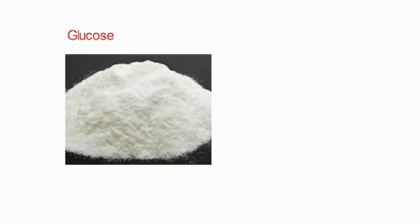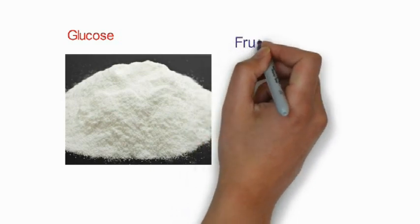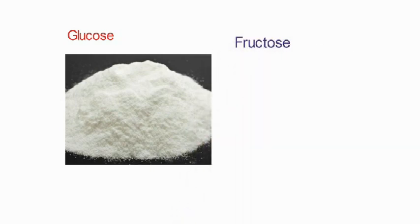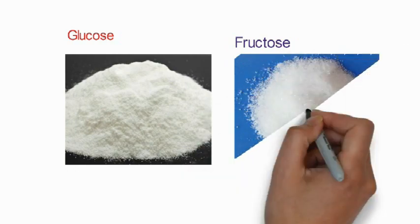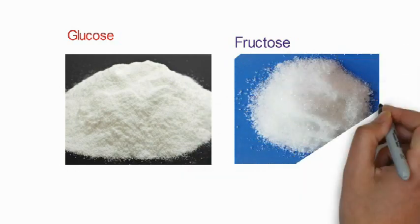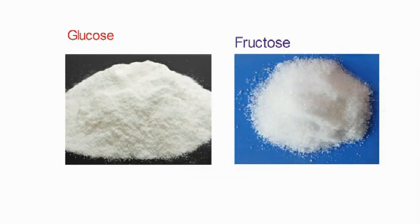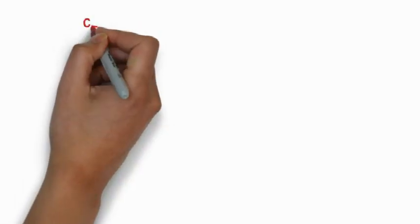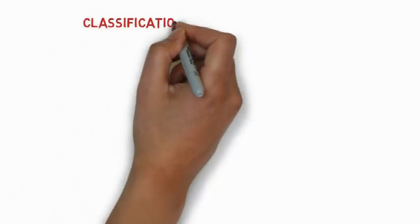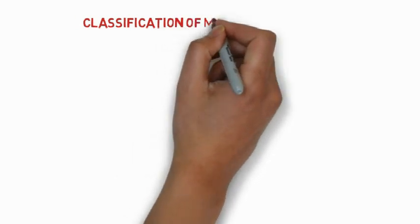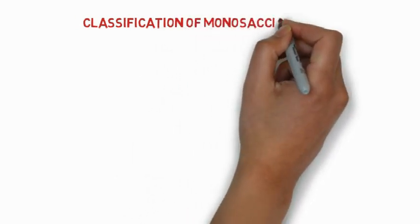Two important examples are glucose and fructose. Glucose is a white crystalline solid and is a aldose sugar. Fructose is also a monosaccharide and you can see here it also forms white crystals.